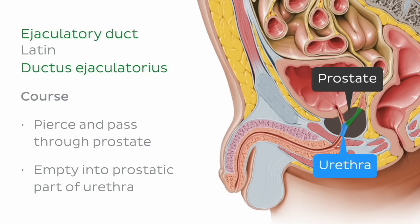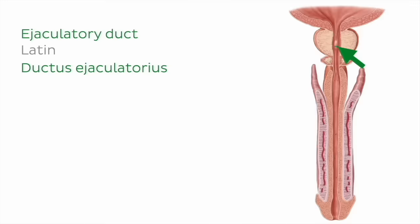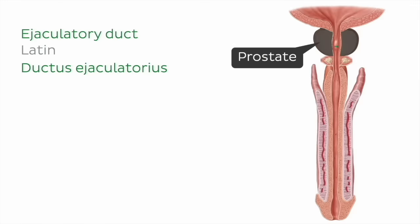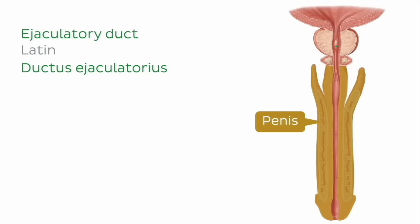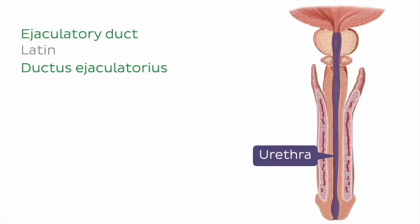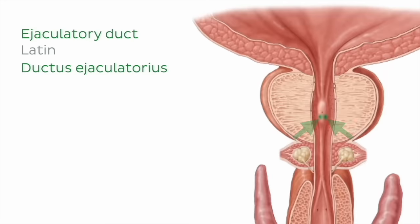Taking a central view and looking at this coronal section, let's take a moment to point out the anatomy. We have the prostate gland located below the bladder, and the penis. We can see the urethra running through these structures. Zooming in, we can clearly see the slit-like openings of the ejaculatory ducts, which empty into the prostatic part of the urethra.